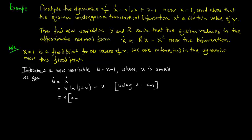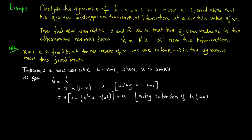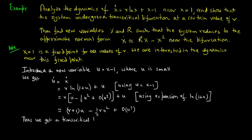Using the expansion of ln(1 + u), we get ů = r(u - u²/2 + O(u³)) + u = (r + 1)u - (r/2)u² + O(u³). Thus we find a transcritical bifurcation at r_critical = -1.